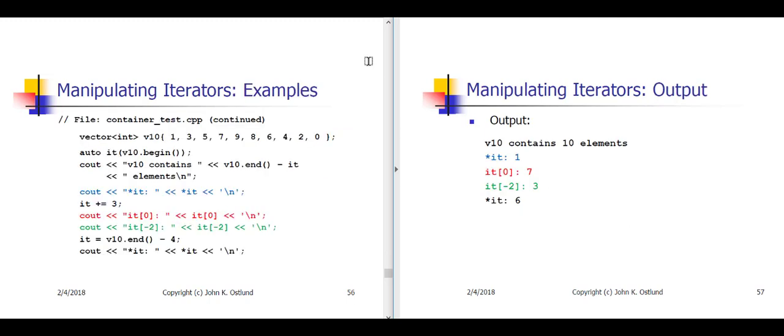Here on slide 56, we have some examples of using the random access iterator that you get with a vector. And on slide 57, we have the output of this little bit of code.